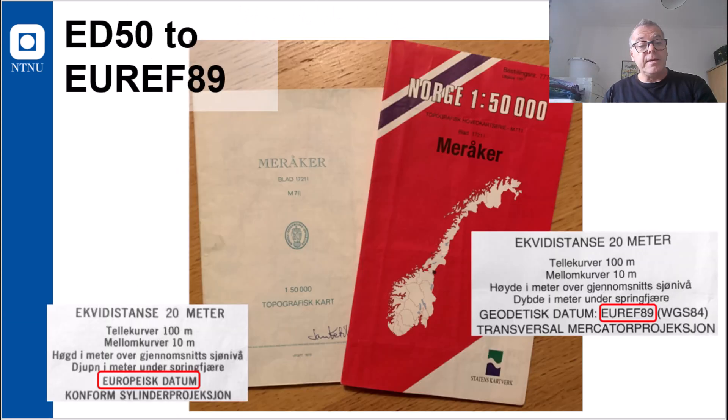So as I mentioned, the ETRS89 is also called EURF89. And if you use paper maps, you may see this reference somewhere below under the map. And this was introduced in Norway in 1997 as the official geodetic reference system, then replacing what was called the European Datum or ED50.